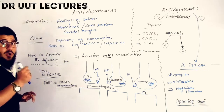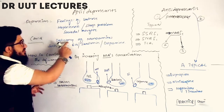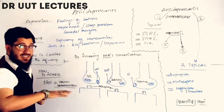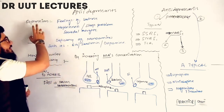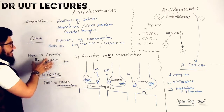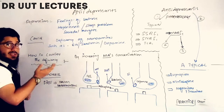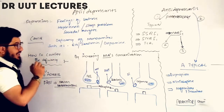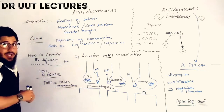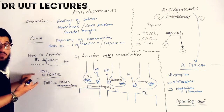The very prominent and important cause of depression is deficiency of monoamines. When the monoamine concentration decreases, that actually gives birth to depression. The question then arises: how do we counter this deficiency? The answer is that we will increase the monoamine concentration.